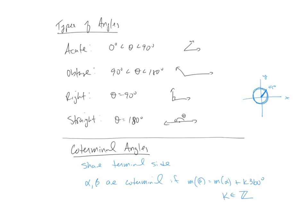So coterminal angles, again, they share a terminal side. To come up with them, you can add or subtract 360 degrees, which is the number of degrees in a circle.